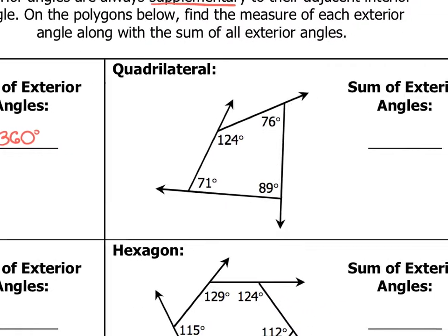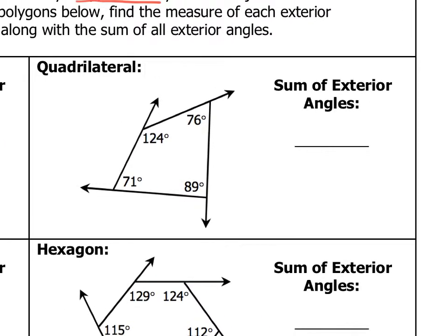For a quadrilateral, I have a quadrilateral with these interior angles. This exterior angle up here would be 56 degrees. The one on the top right would be 104 degrees. On the bottom right, this would be 91 degrees, and on the bottom left, 109 degrees. If I add up all of those exterior angles, I again get 360 degrees.